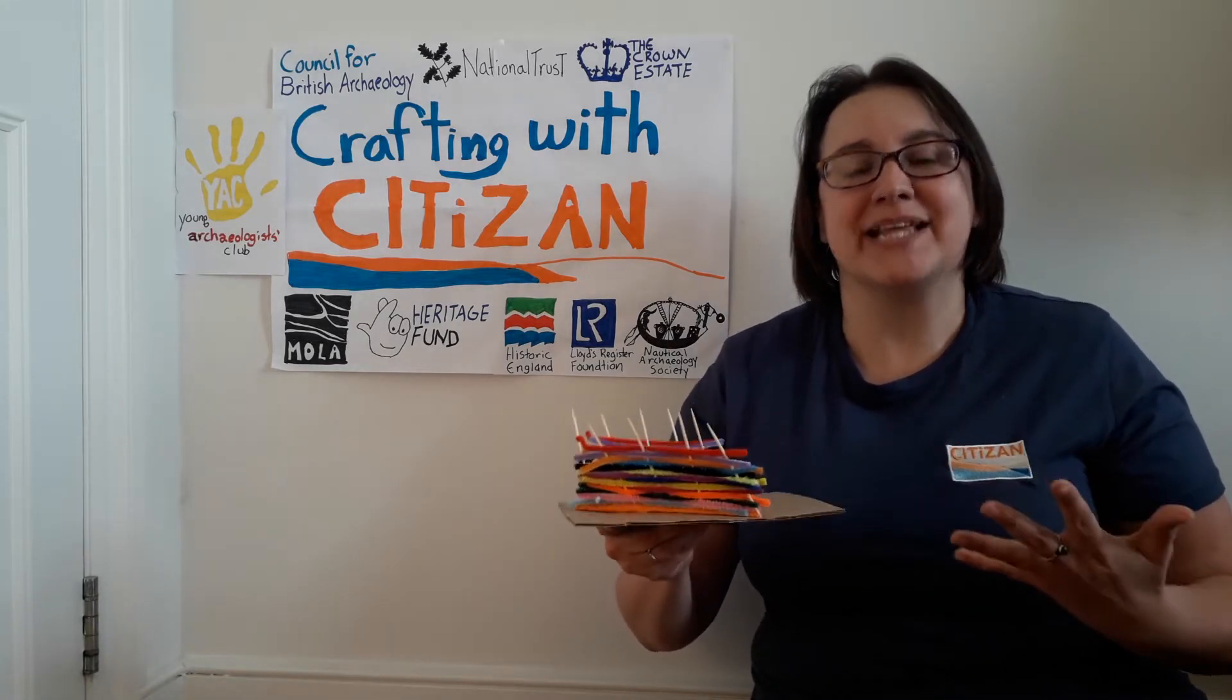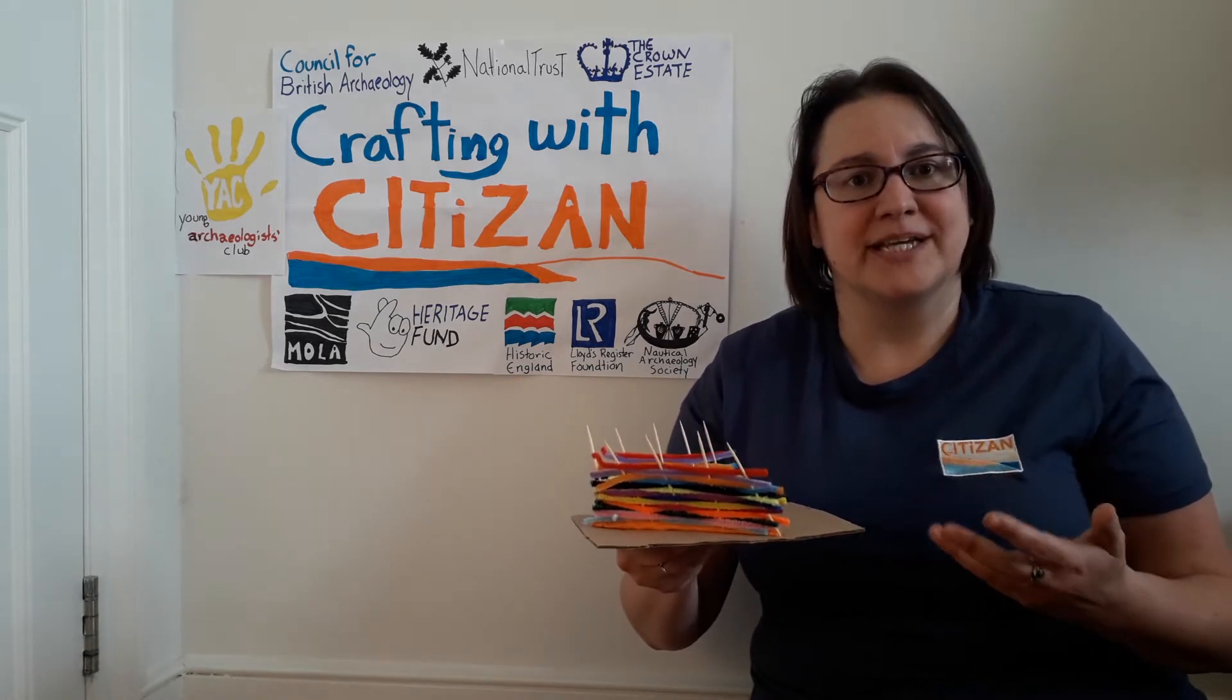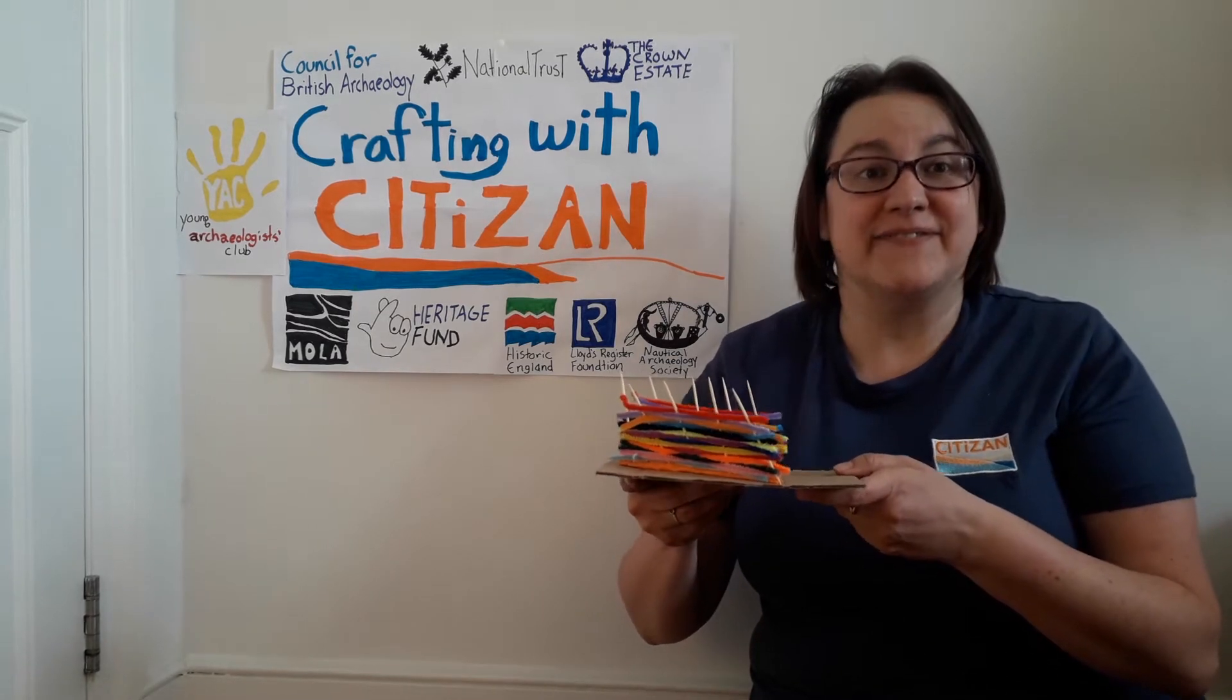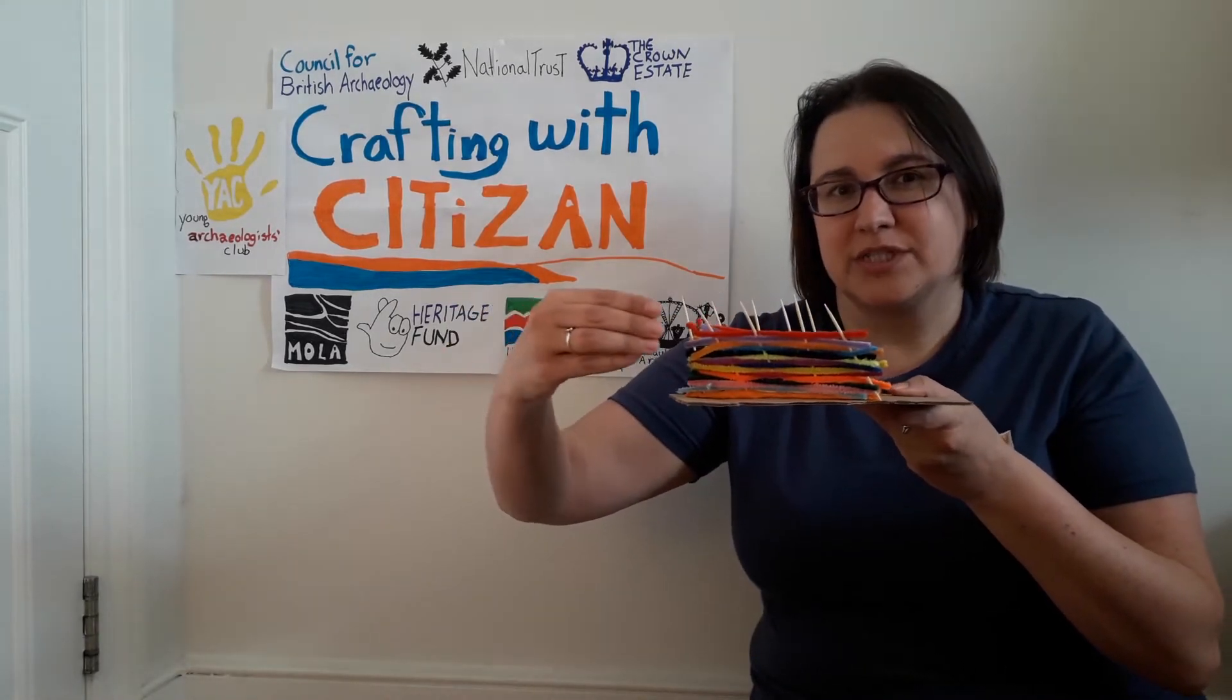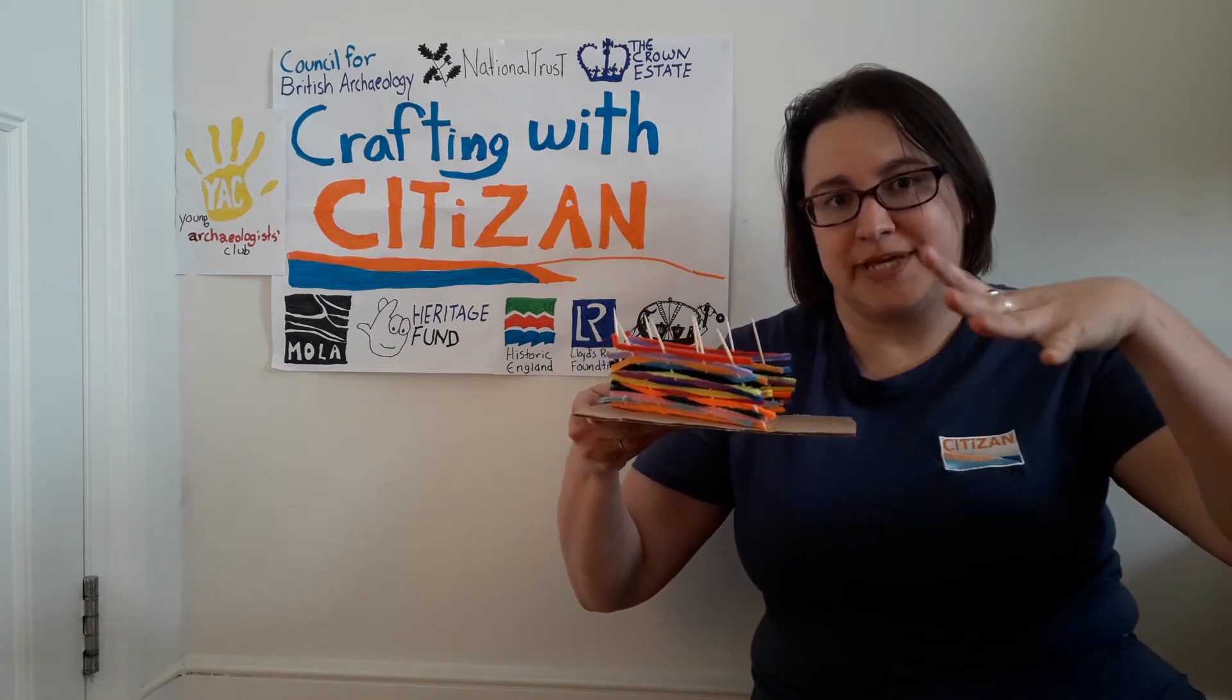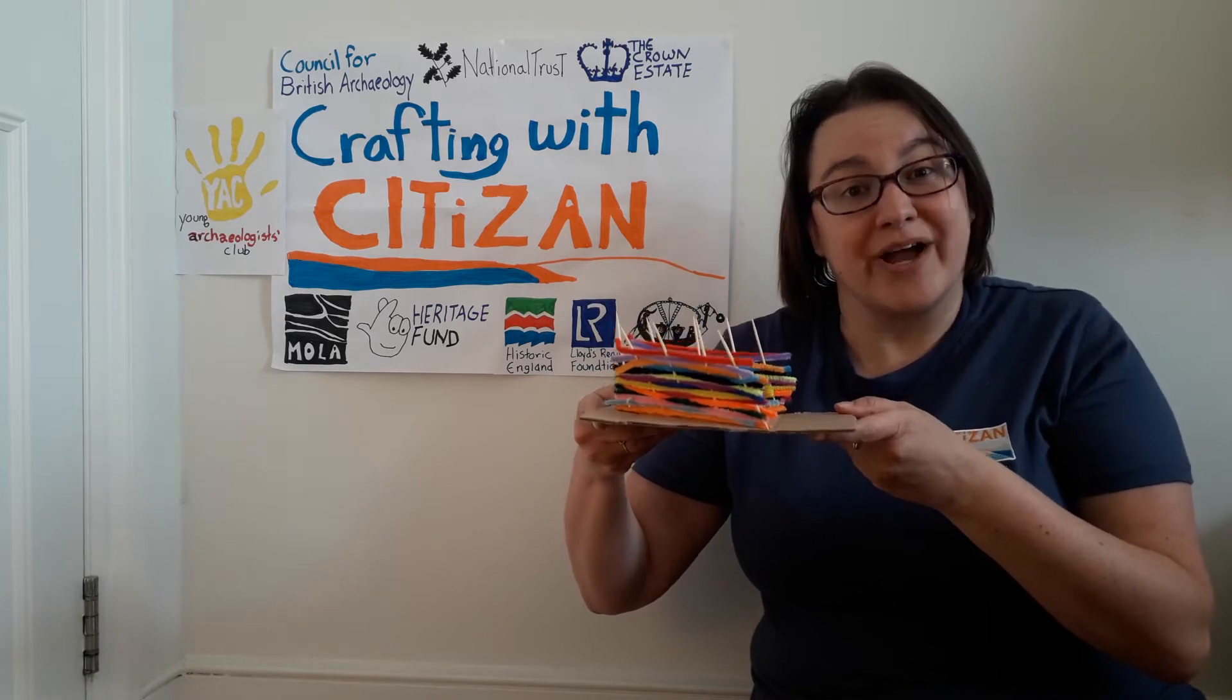Now there are many different types of ways that people use weirs and traps to catch fish. The one that we are going to make today is a v-shaped one, and how it worked was that you had the pointy end towards the sea and the wide end towards the beach. Think of them a little bit like corrals for fish.